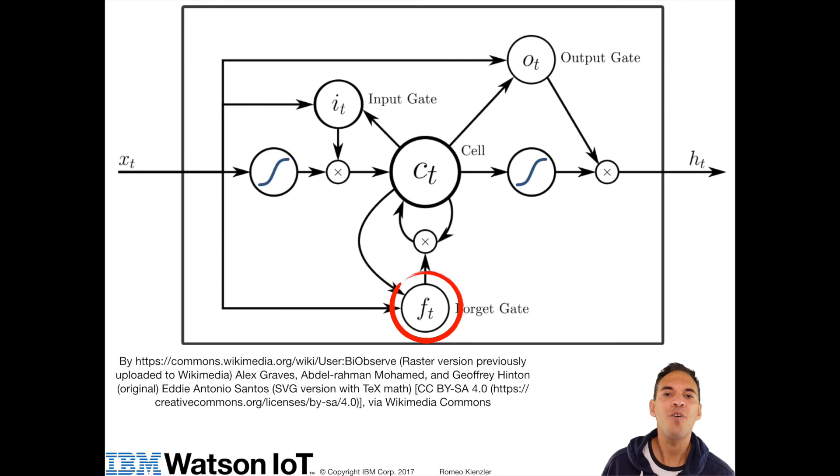They discovered that without the capability of forgetting the cell state Ct may grow indefinitely and eventually causes the network to break down. Again, the forget gate is controlled by the actual input Xt and the current cell state Ct. And again, through calculation of a dot product between the output of the forget gate and the previous cell state Ct, it controls how much of the actual cell state Ct is preserved.